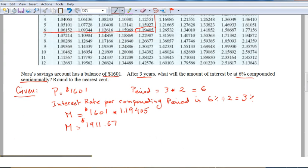So the interest is maturity value minus the principal, which is $1601. That will give us the interest to be $310.67.